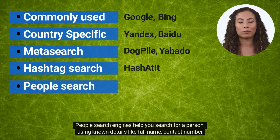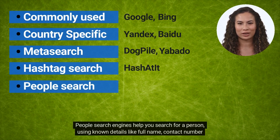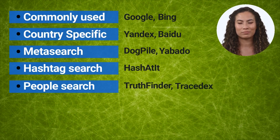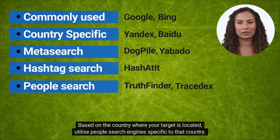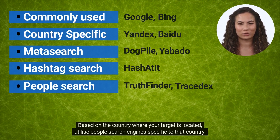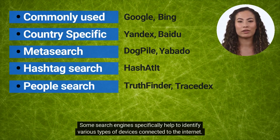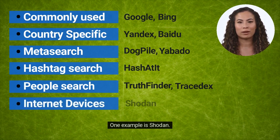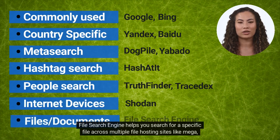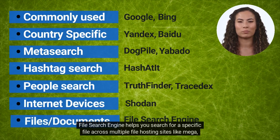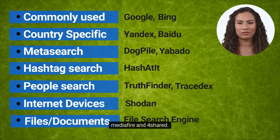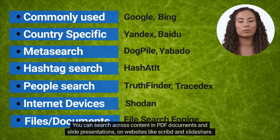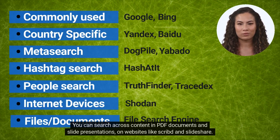People search engines help you search for a person using known details like full name, contact number, or their address. Some examples are TruthFinder and TraceDeck. Based on the country where your target is located, utilize people's search engines specific to that country. Some search engines specifically help to identify various types of devices connected to the internet — one example is Shodan. File search engines help you search for a specific file across multiple file hosting sites like Mega, Mediafire, and 4Share. You can also search across content in PDF documents and slide presentations on websites like Scribd and SlideShare.